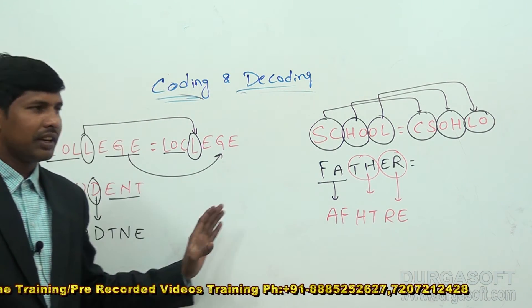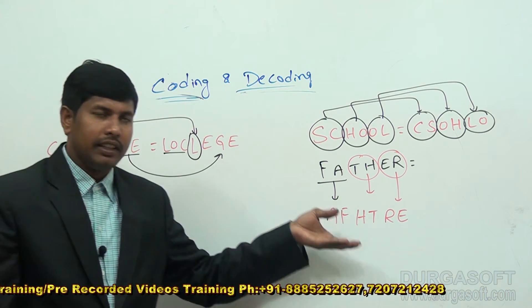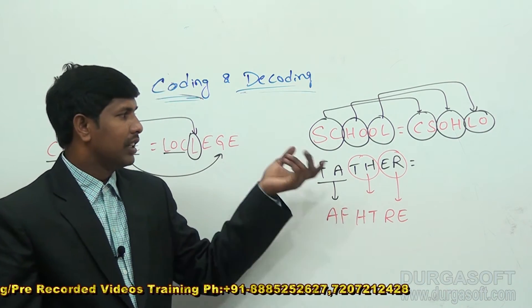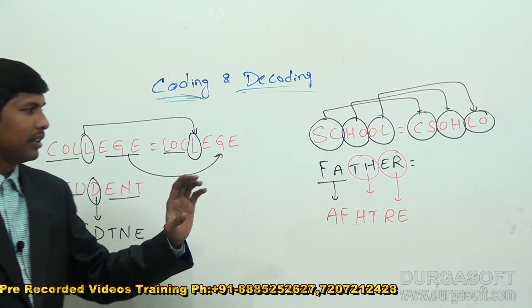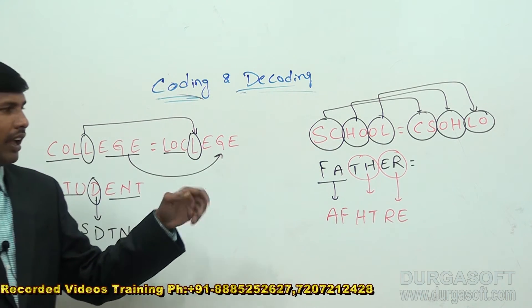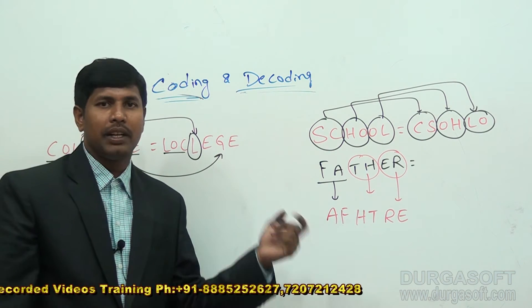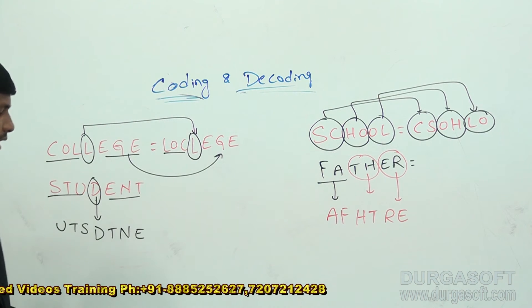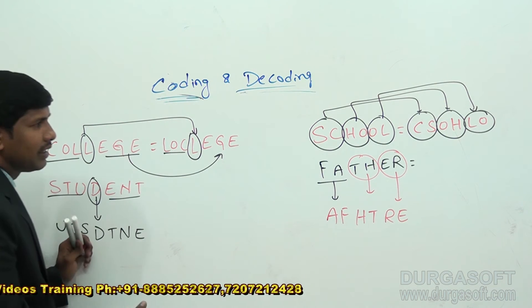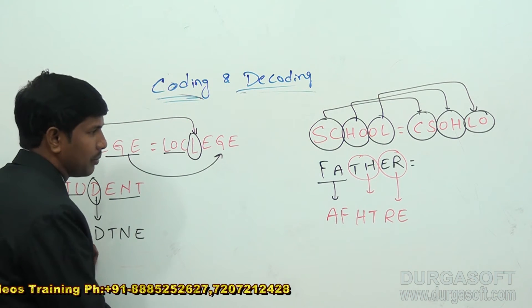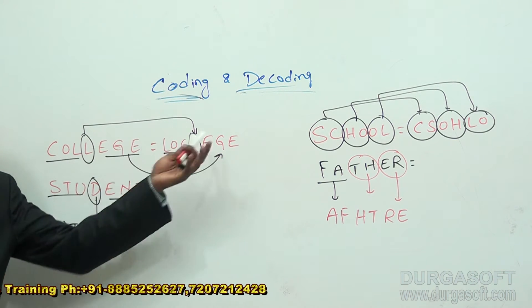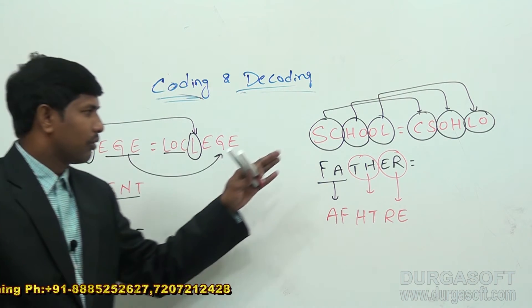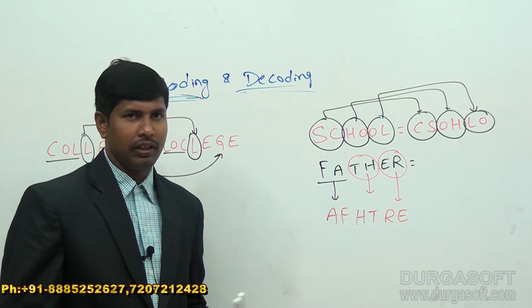According to the same logic: F-A becomes A-F, next two letters T-H become H-T, and E-R becomes R-E. This is the code for father. Whatever logic they give — whether writing in reverse order, taking letters two by two, or handling first and last parts excluding the middle — we should follow the same thing.